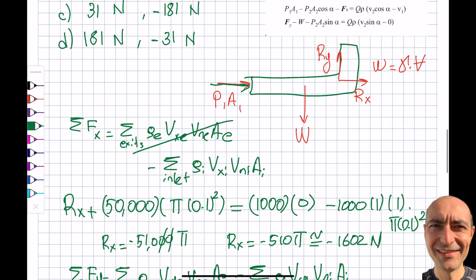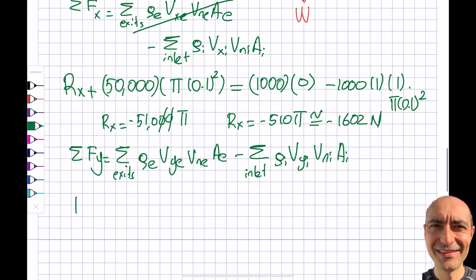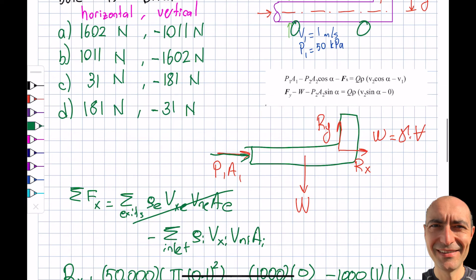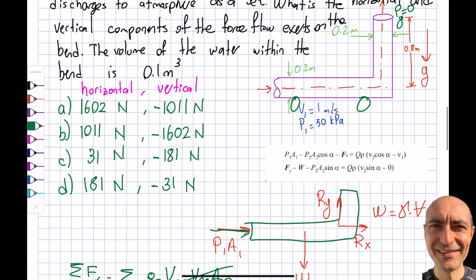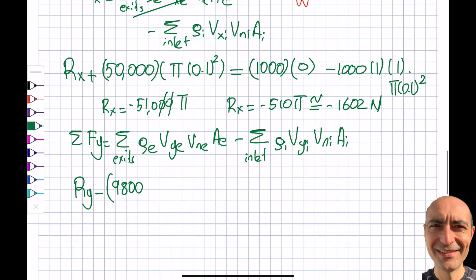So Fy, I simply look at my free body diagram. It turns out Ry minus the weight. The weight will be 9,800. So this is Newtons per meter cubed. It's 9.8 times 1,000. The density of water is 1,000 times 9.8. I got myself 9,800 Newton per meter cubed. It's my specific weight and the volume is 0.1 meter cubed.